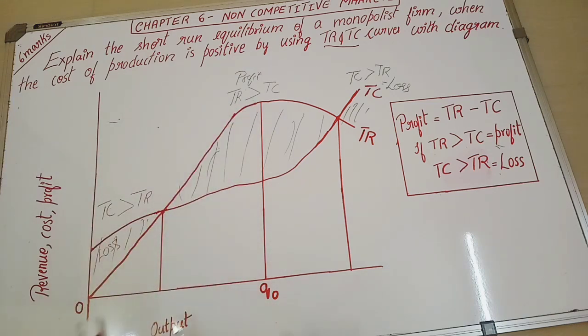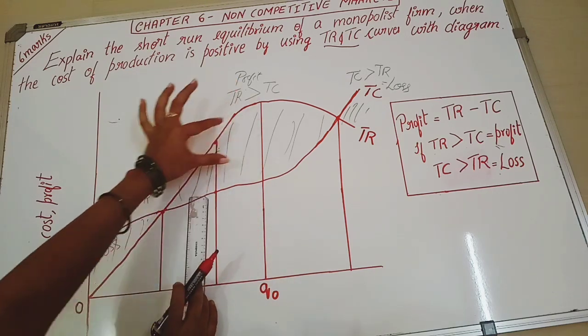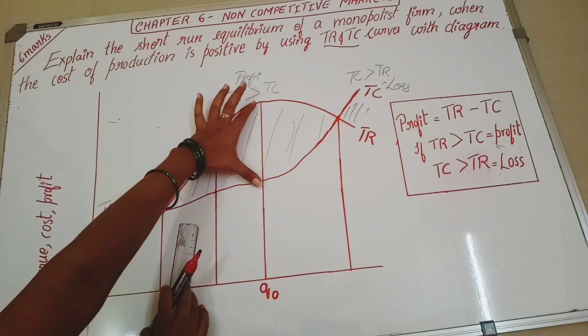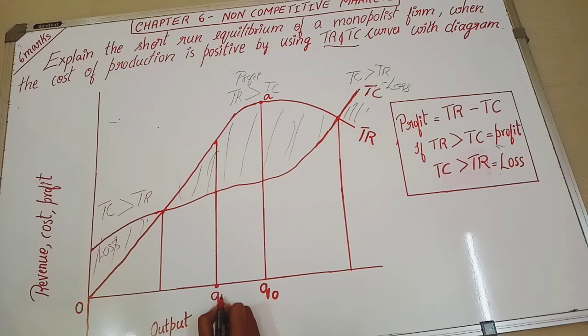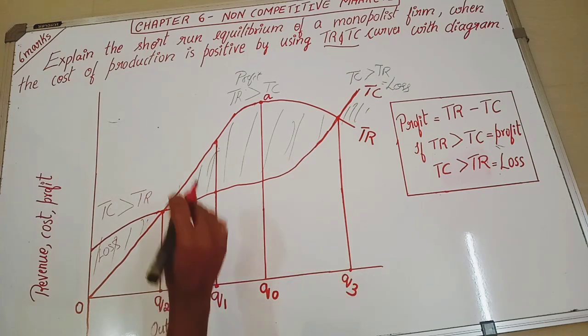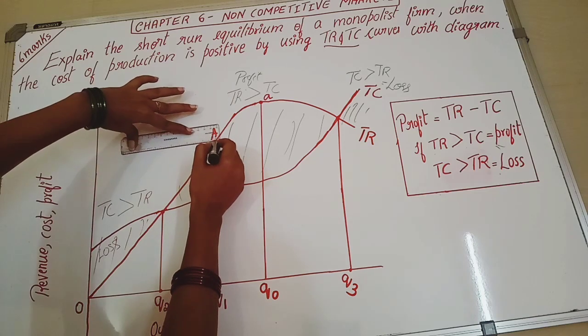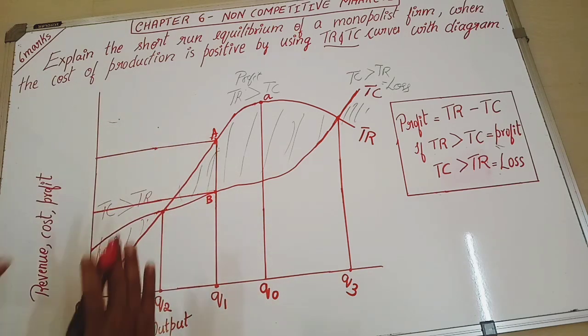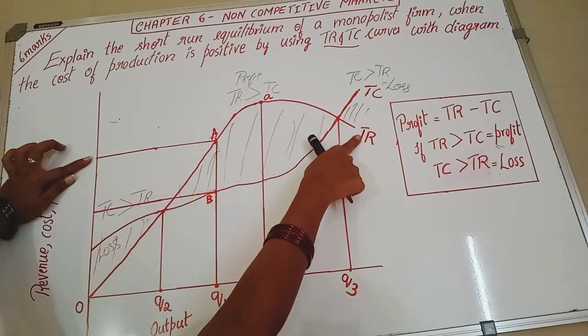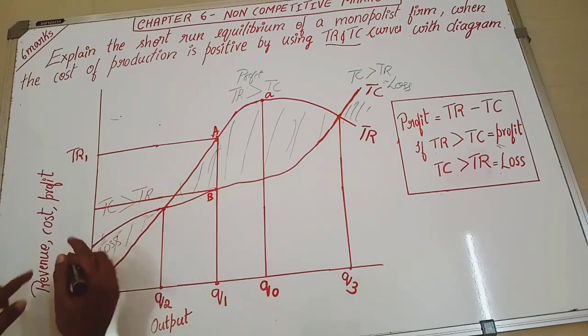So we shall draw a line here where this is my maximum profit. So this is my Q0 level of output. Then one more portion we shall take. I will give this as a name A. Now this point I will name it as Q1 level of output, Q2 level of output, and this one Q3 level of output. This portion of profit I will name it as A and B here.